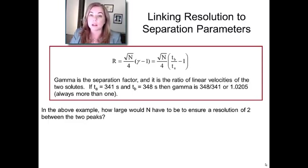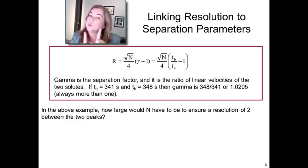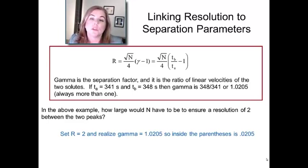So let's say in this above example in the box. How many theoretical plates would you have to need, would you have to have in order to separate these two very closely spaced peaks? Well, we just set R as equal to two because that's our desired resolution. Gamma has already been given to us. I calculated it to be 0.0205.